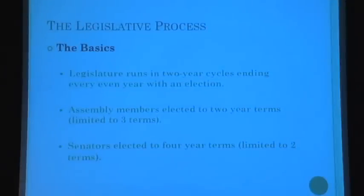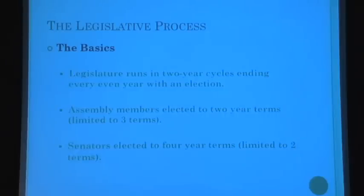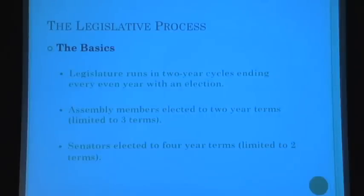First, the legislative process basics. We're a bicameral system — we have two houses. We have an assembly, which has 80 members, and a senate, which has 40 members. Assembly members are elected for two years each; senators are elected for four years. Assembly members have three terms of two years; senators have two terms of four years. Each legislative cycle is basically two years. We're in the first year of the two-year legislative cycle right now. It'll end at the end of 2012 with the election in the fall, and new members will come in in 2013.